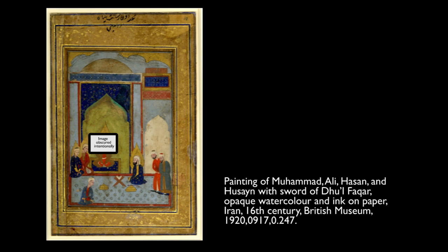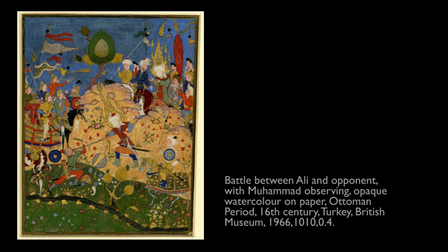Muhammad and other prophets continue to be depicted. This practice was most strong in the Iranian world — a much larger area in the pre-modern period, including parts of Central Asia. This painting is in the Shia tradition because we see Ali depicted — a cousin of Muhammad — and his sons Hassan and Hussein, and also the sword of Ali, which is an important Shia symbol, in the centre. There also developed a tradition of depicting Muhammad with a veil over his face, and most religious figures were depicted this way in a lot of manuscripts. In this Turkish manuscript, we see Ali fighting in the centre and Muhammad veiled at the top — you can usually notice them because they have a fire halo around them.